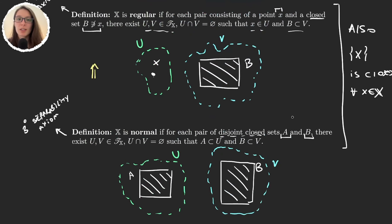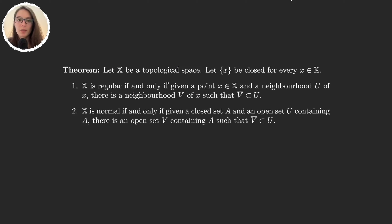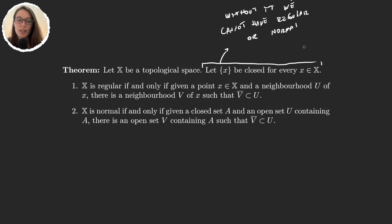Now let's work with a theorem that gives us a different characterization of regular and normal spaces. For these two definitions we need either a point and a set, or two closed sets. We will see that it is useful to also use the definitions of regular and normal when working with just one point and a neighbourhood of that point, or a closed set and an open set that includes it. Let's see alternative definitions for normal and regular. In this theorem, we have a topological space for which point sets are closed — remember that without this condition we cannot talk about regular or normal.